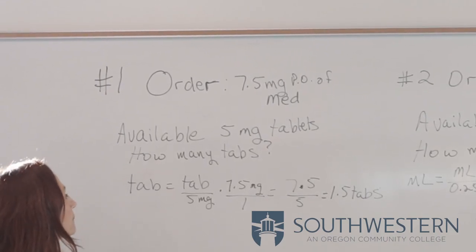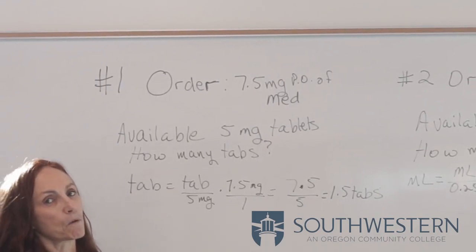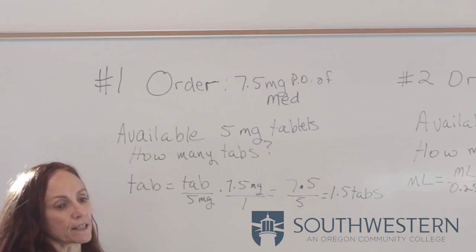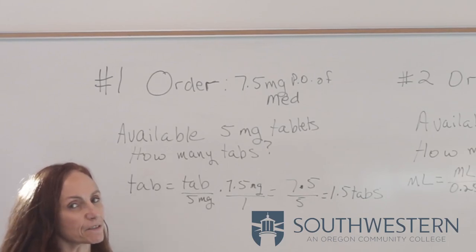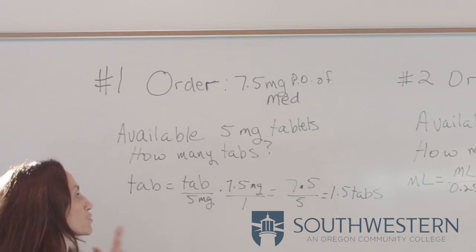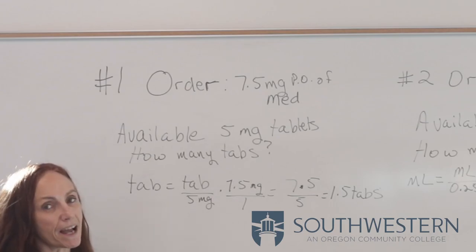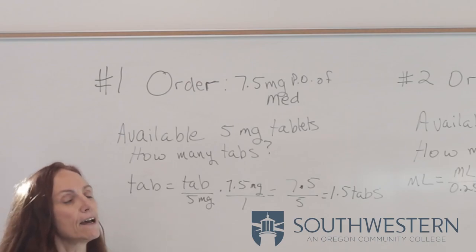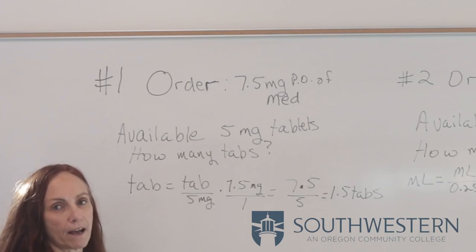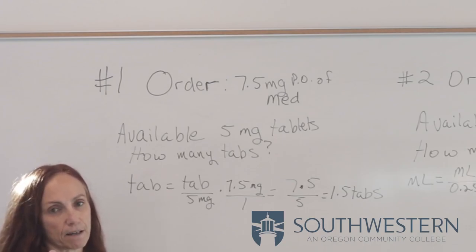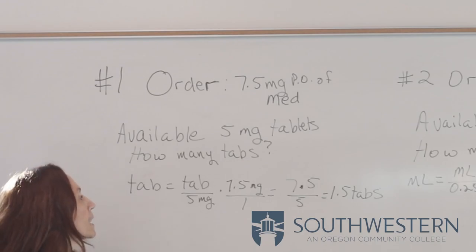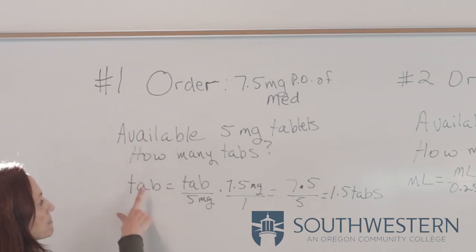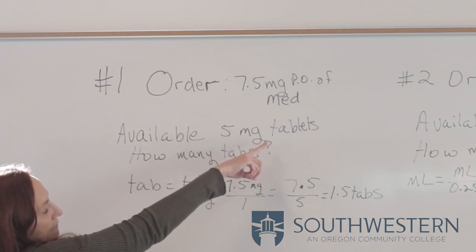The method I'm going to show you is dimensional analysis, because that's what has always helped me in making sure that the units I want are the units I end up with. If you prefer ratios, you can look at the Kaplan videos. Because I'm looking for tablets, I go: tablet equals, and I start with what I have available.